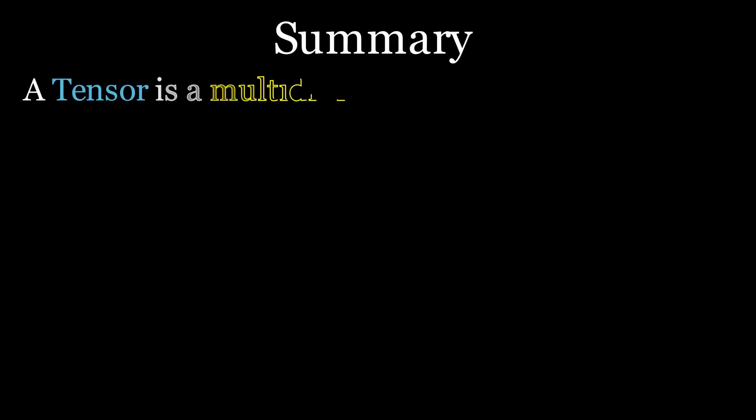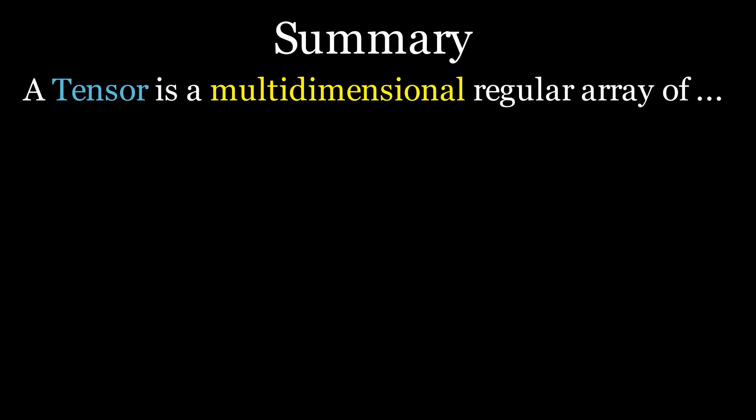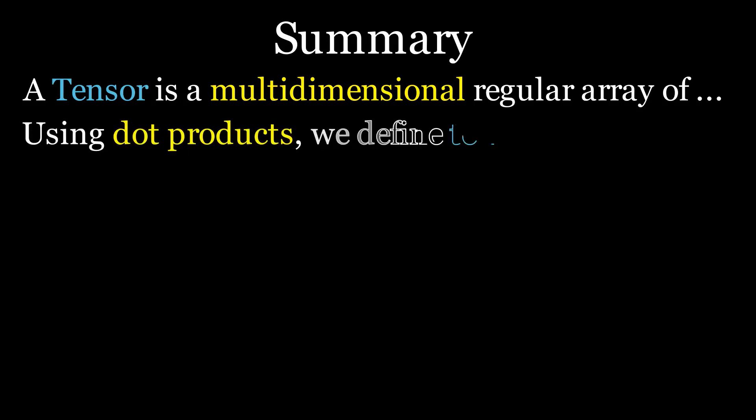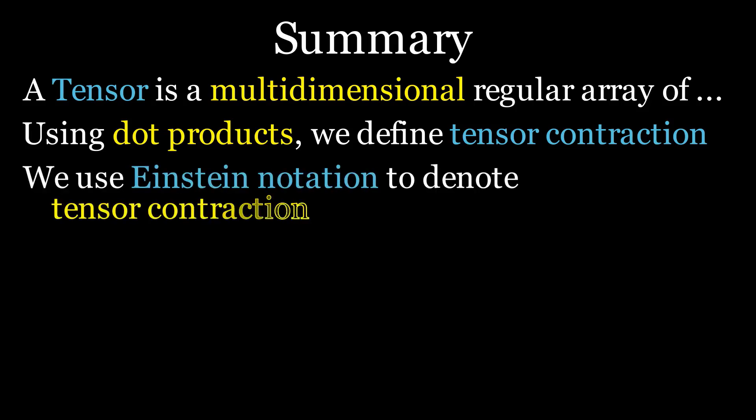To review the key points: first, a tensor is simply a multidimensional regular array — vectors and matrices are tensors, as are three-dimensional and higher objects. Second, using dot products between dimensions, we can define a general operation called tensor contraction. Third, Einstein notation lets us concisely define which dimensions are being contracted. If you're wondering why any of this matters, watch the next video on computing derivatives with tensors — they are a very useful tool.